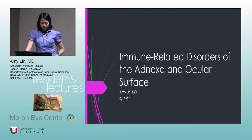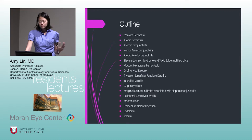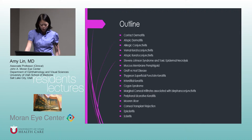We're going to get started. I'm talking about immune-related disorders of the adnexa and ocular surface. There are a lot of them — this is the list, and it's not even the full list. I took off some real zebras that I didn't think were as important. We'll go through most of them, spending more time on a few. The order follows BCSC, which is somewhat random and not even by severity.